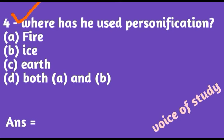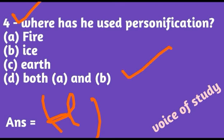Question number four: where has the poet used personification? The options are fire, ice, earth, or both A and B. Both fire and ice are used with personification. So the correct option is D — both A and B.